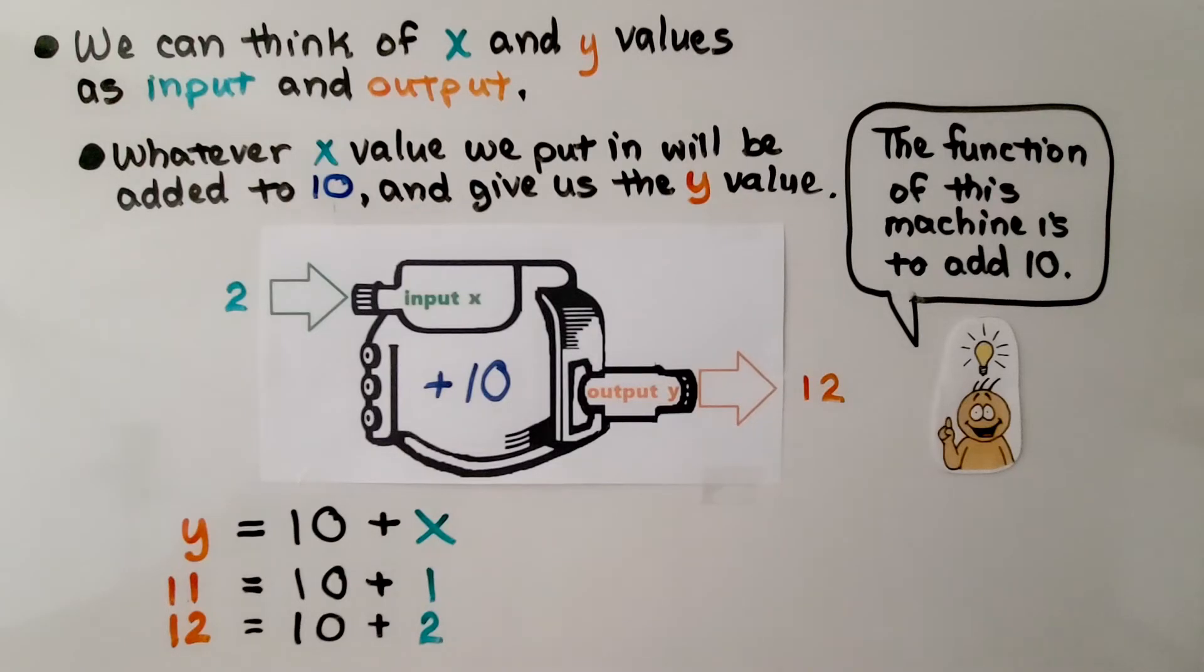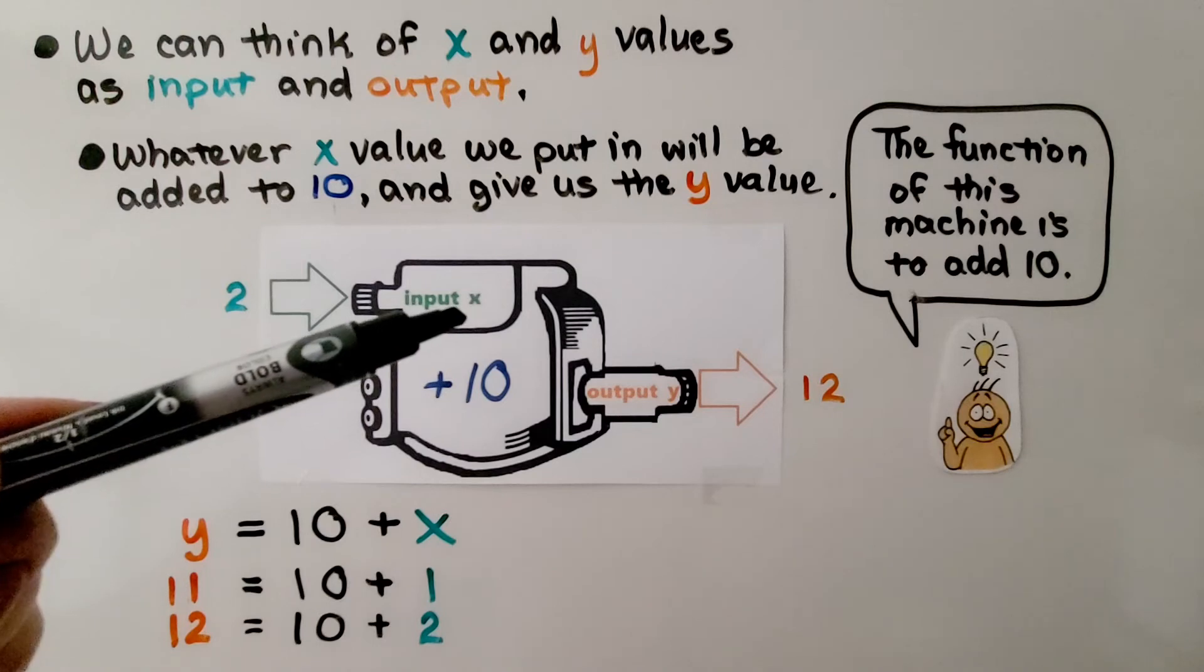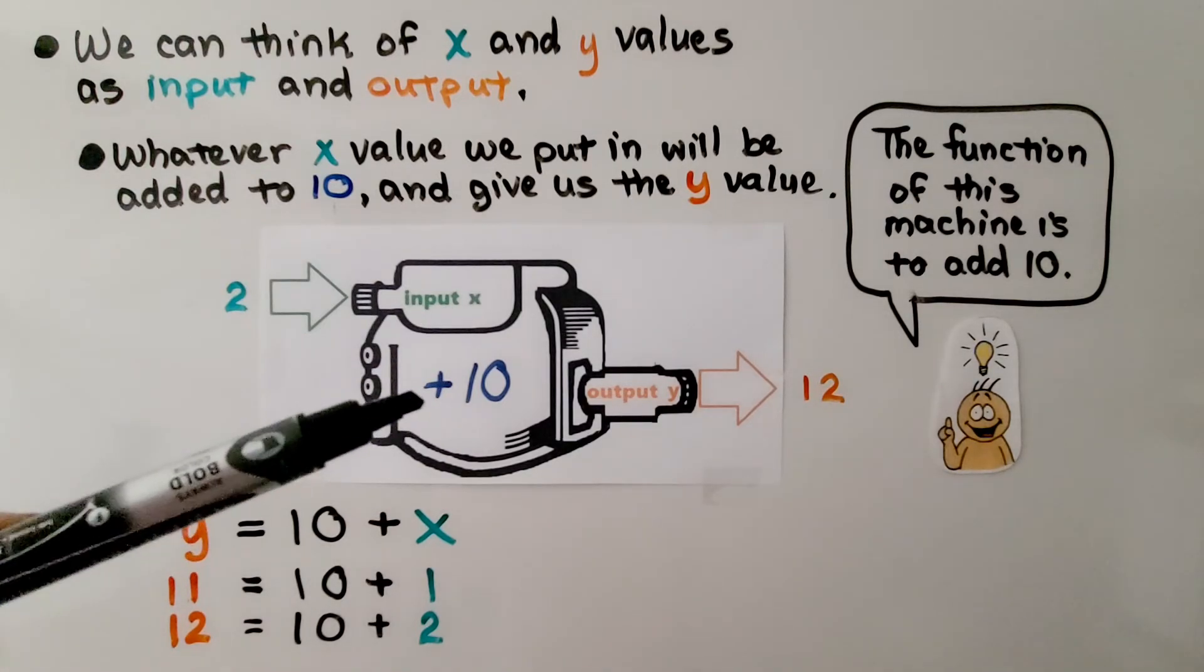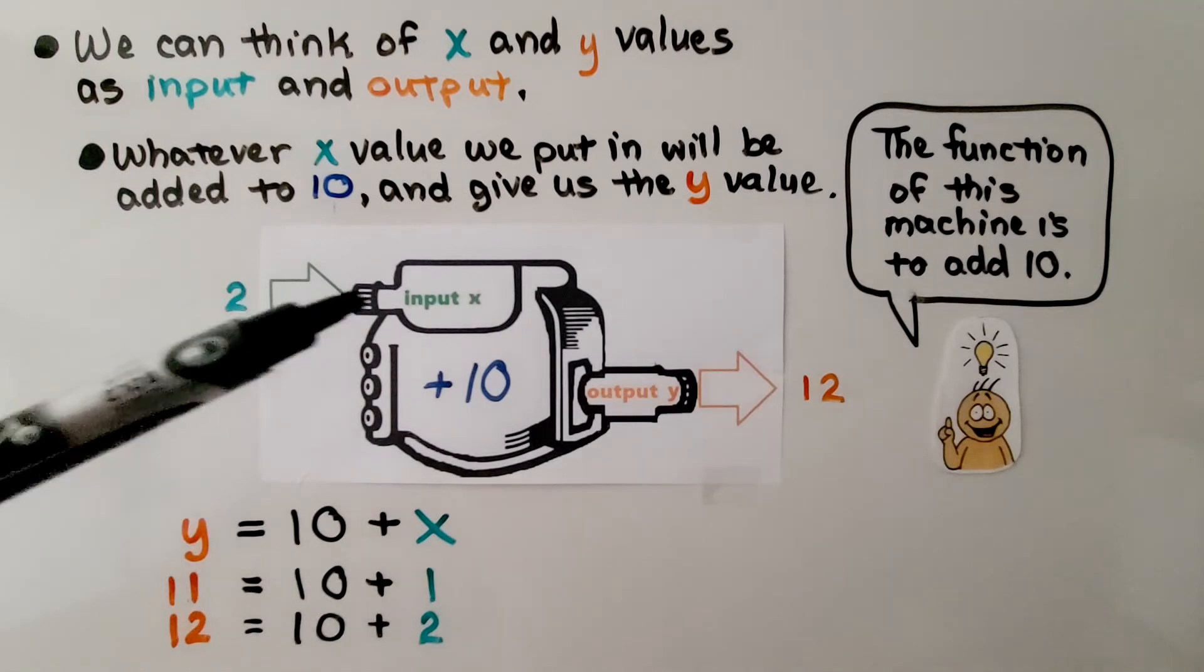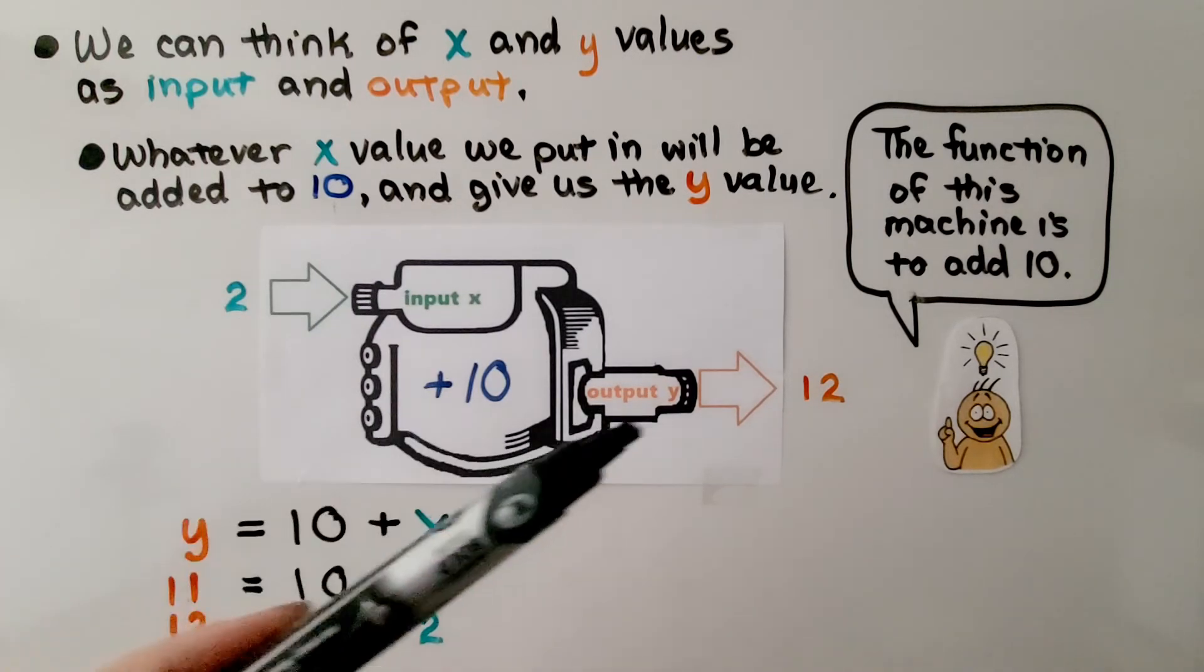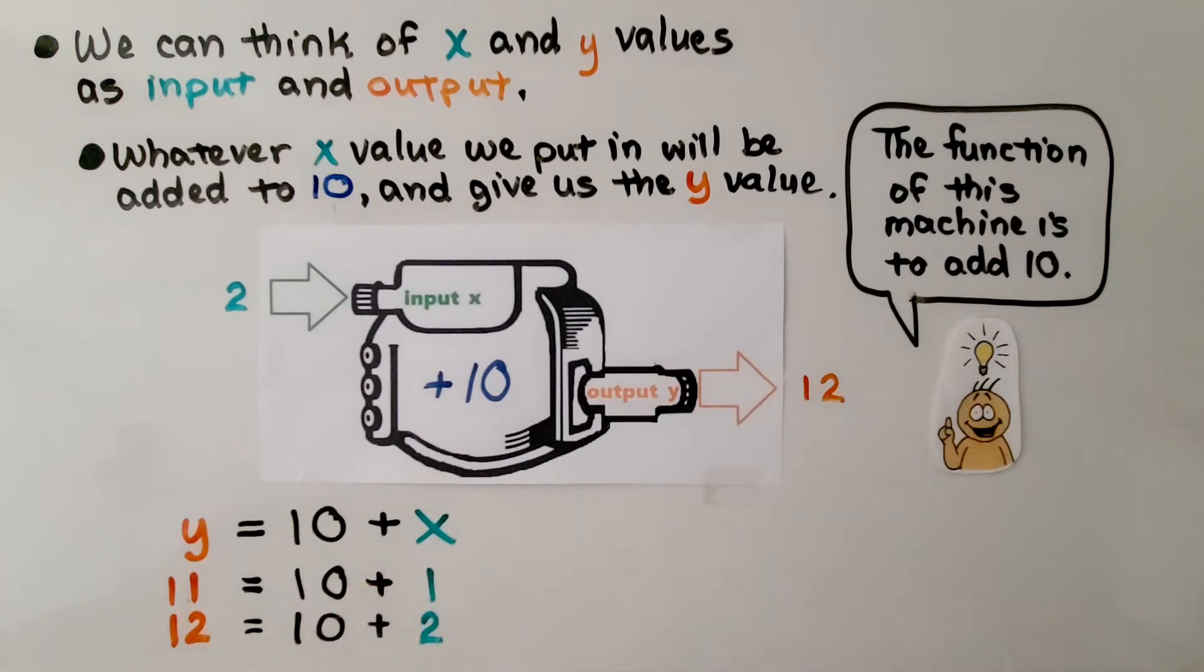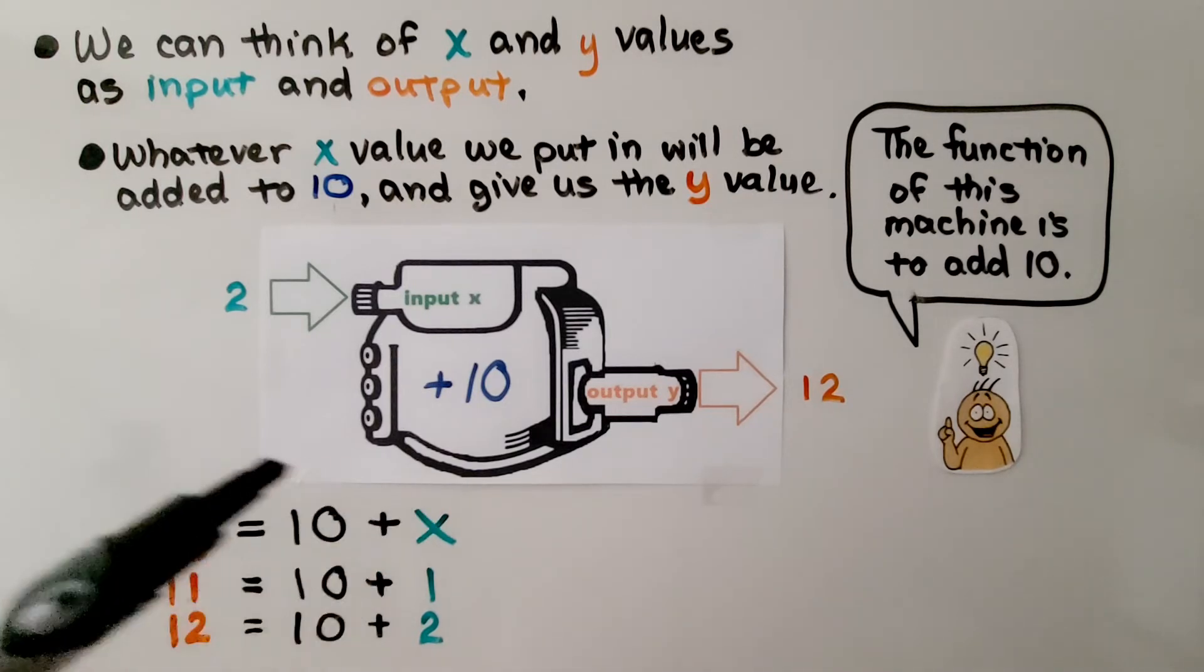We can think of X and Y values as input and output. Whatever X value we put in will be added to 10 and give us the Y value. If we put in 2, it's going to add 10 to it and we're going to have an output of 12.